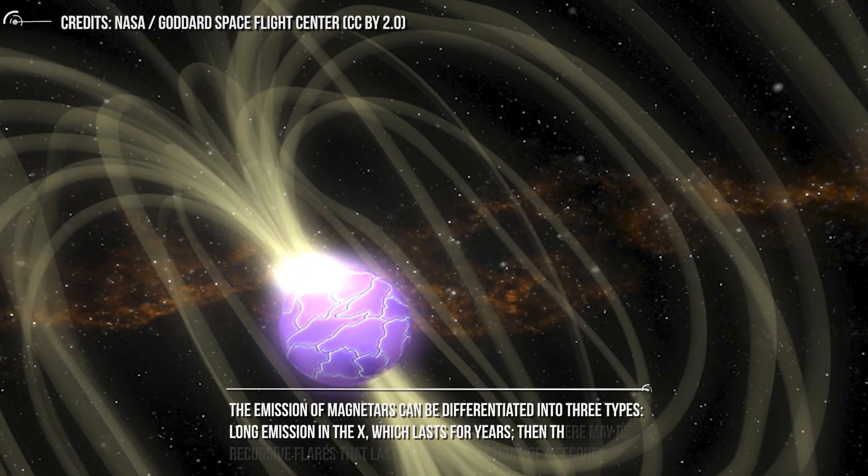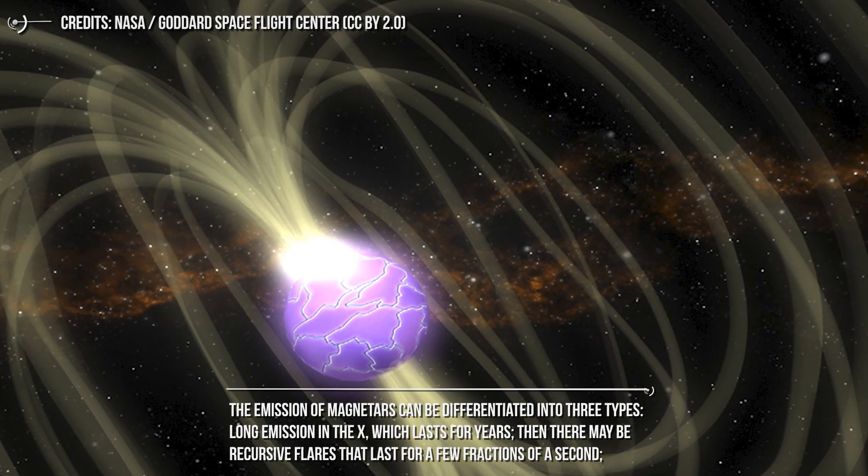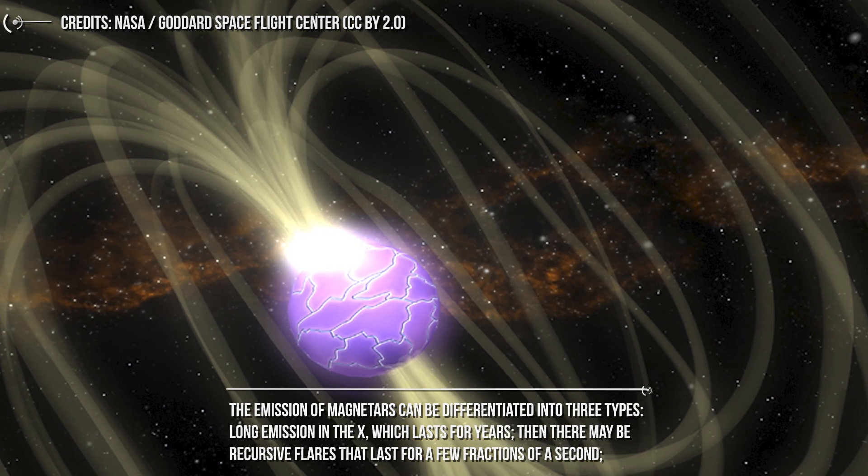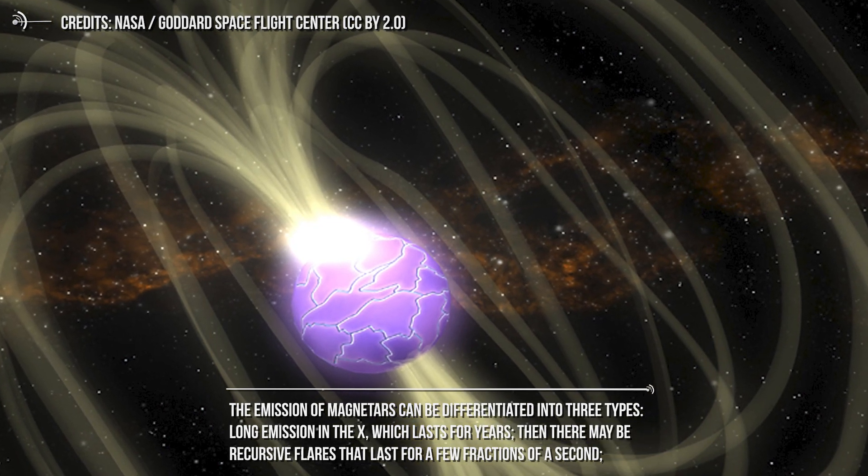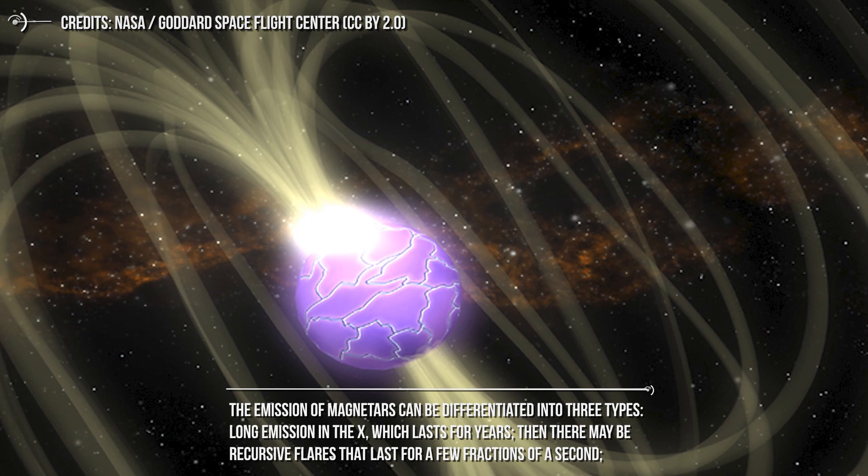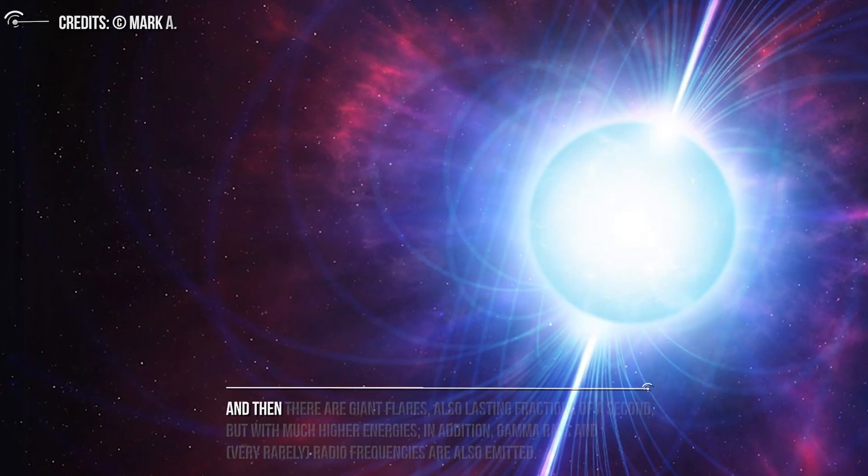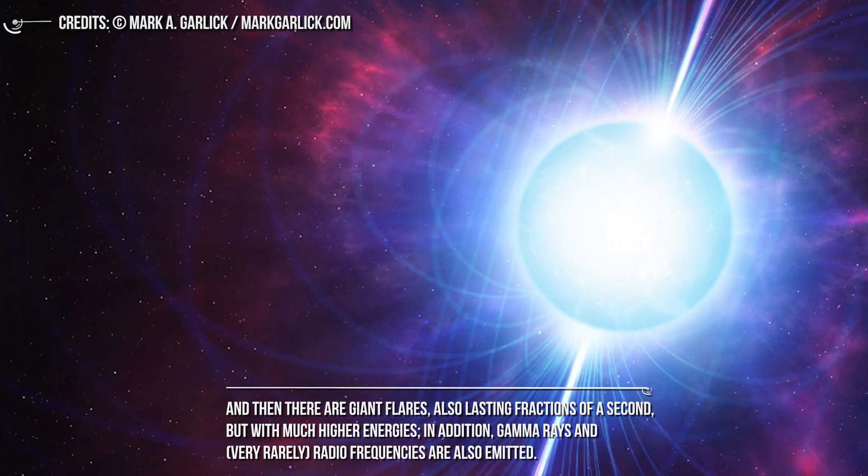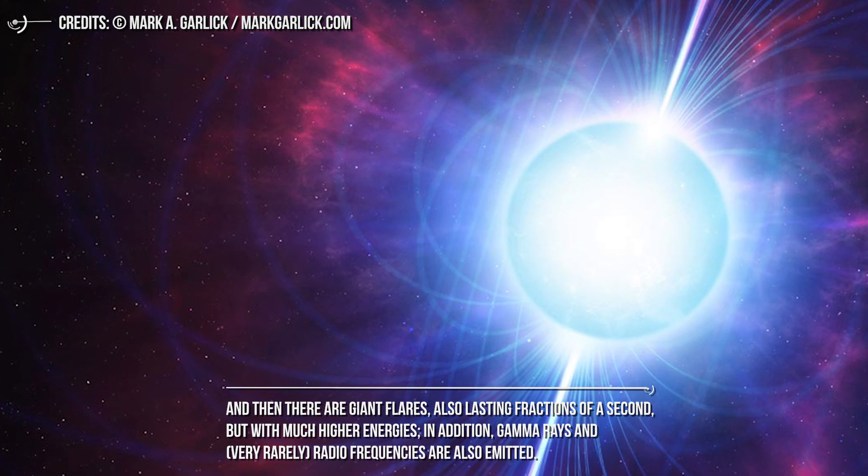The emission of magnetars can be differentiated into three types. Long emission in the X, which lasts for years, then there may be reclusive flares that last for a few fractions of a second, and then there are giant flares, also lasting fractions of a second, but with much higher energies.